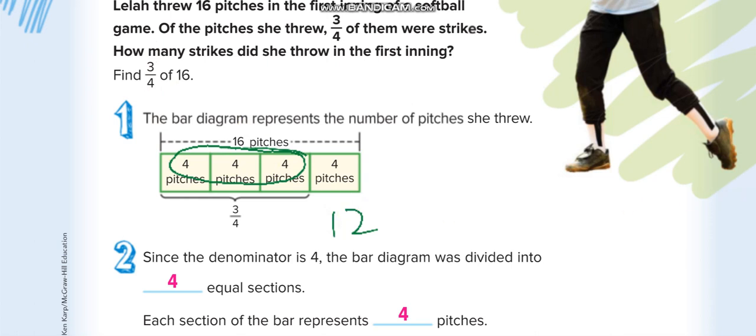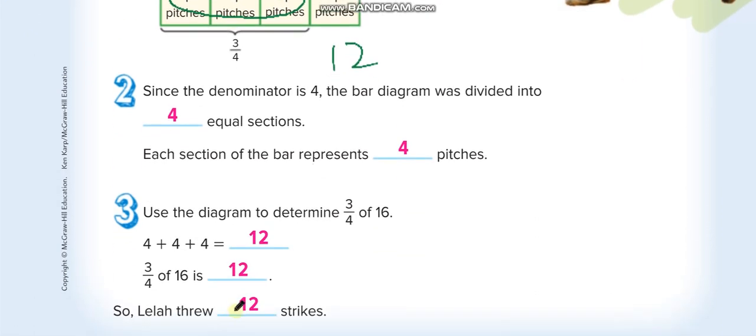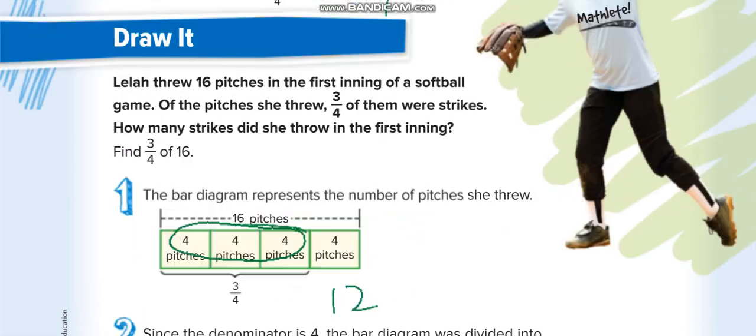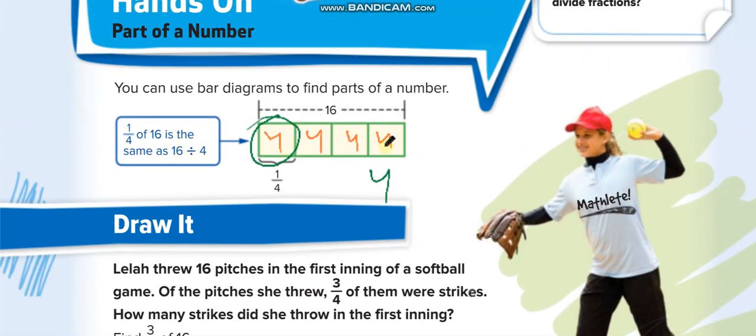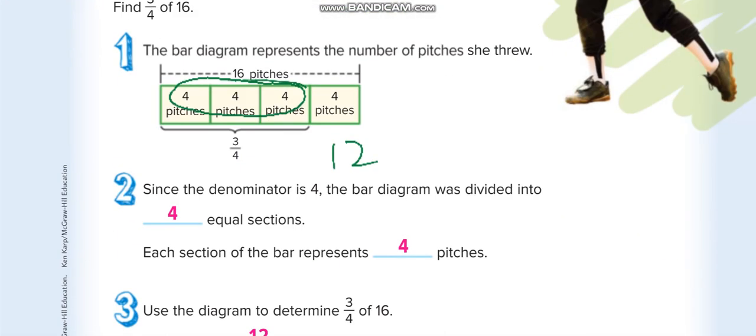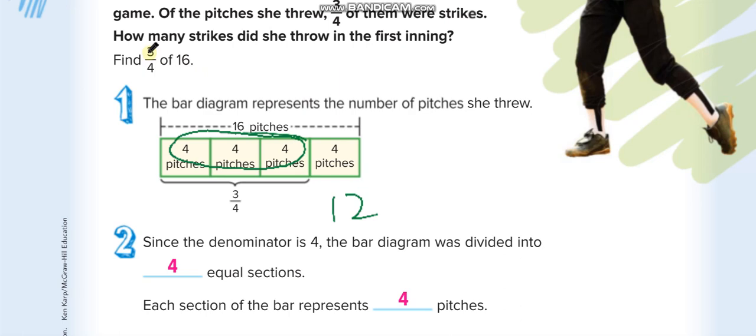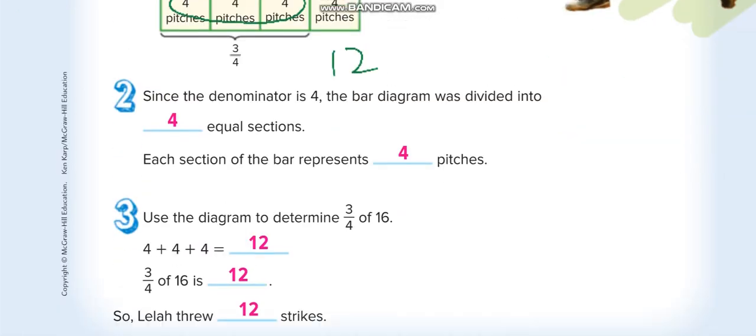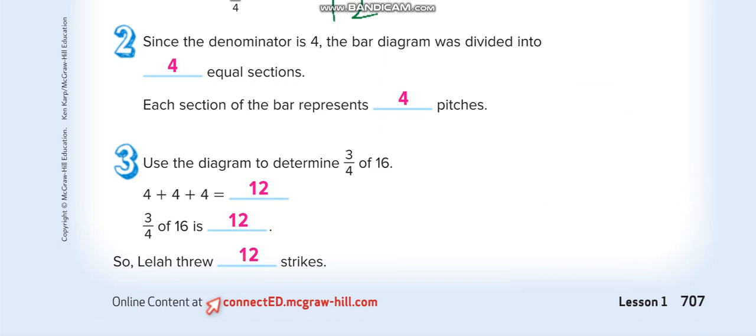The second way of finding without models: you multiply the whole number with the numerator and divide it with the denominator. 16 times 1 is 16, and divide by 4 equals 4. Similarly here, 16 times 3 is 48, and 48 divided by 4 is 12. So you can do it with models or without models.